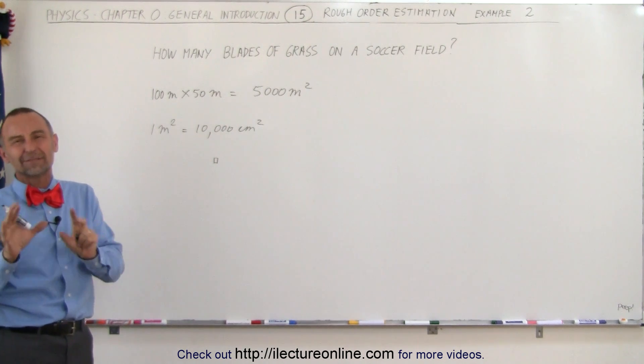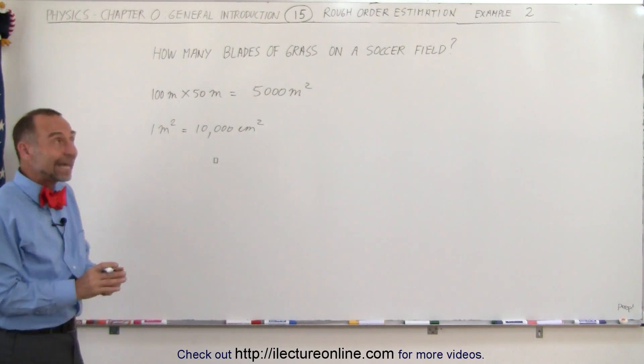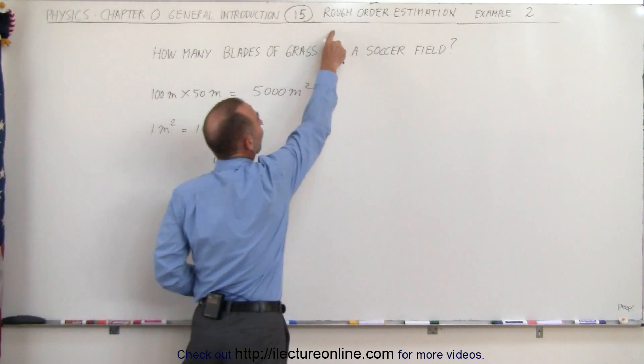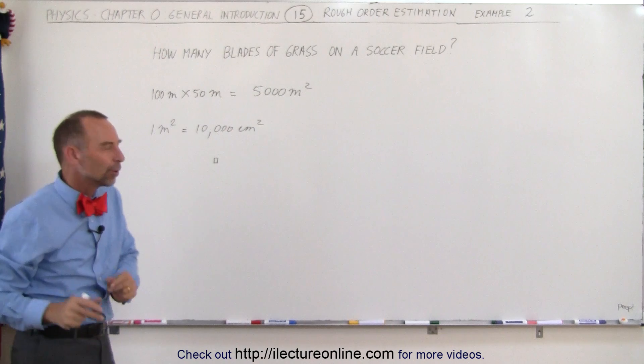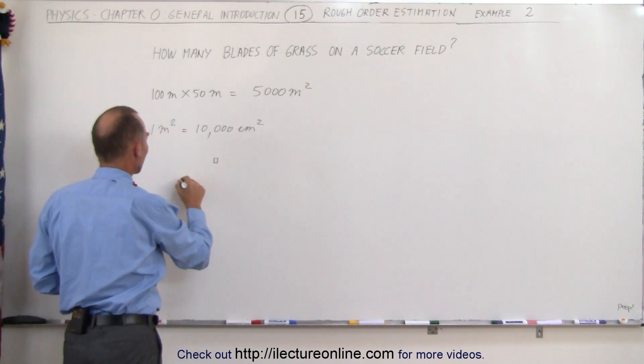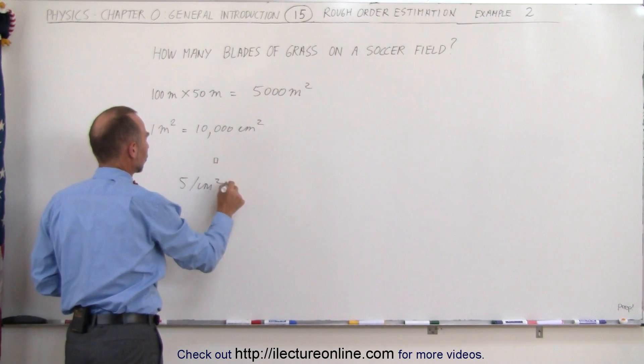Could it be one, could it be ten? Yes, but five is probably a pretty good number, and again, it's what we call rough order of estimation. We want to get a rough order. So let's say five per centimeter squared.